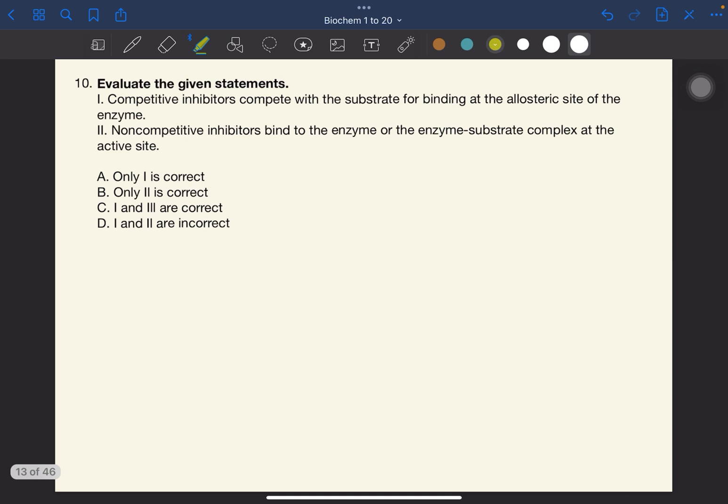Number 10. Evaluate the given statements. Competitive inhibitors compete with the substrate for binding at the allosteric site of the enzyme. So this is wrong. Competitive inhibitors compete with the substrate for binding at the active site. And two, non-competitive inhibitors bind to the enzyme or the enzyme substrate complex at the active site. So this is wrong.